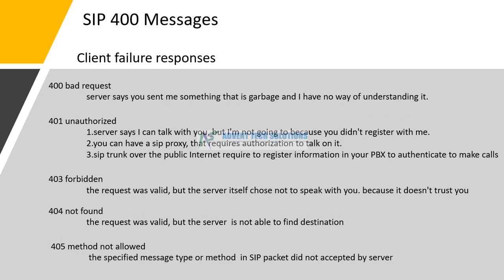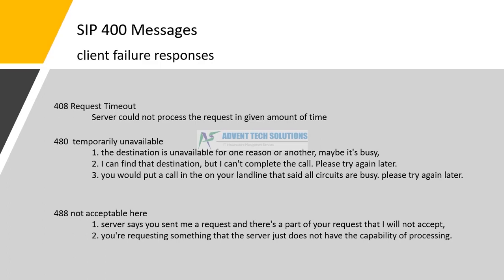If you have a destination that is not allowed, you need to check. If you call your friend and initiate the call, check the dial number, check the server, and check the method in your SIP packet. If you receive SIP message 405, the method is not accepted. Check the method in your SIP packet to ensure it is in the correct format.